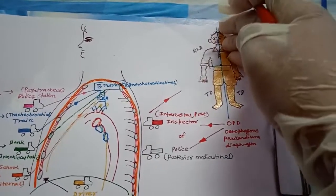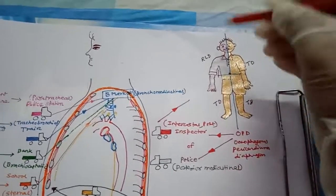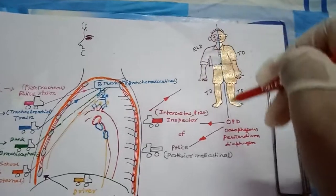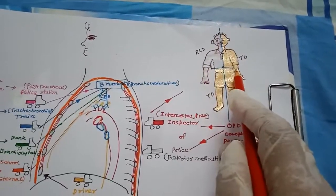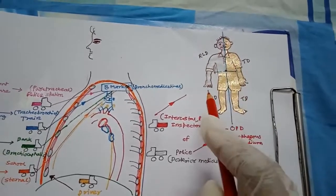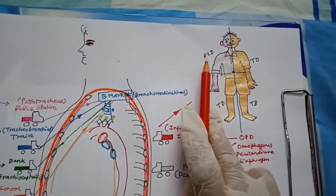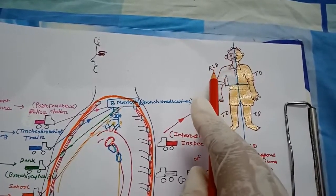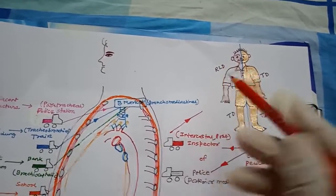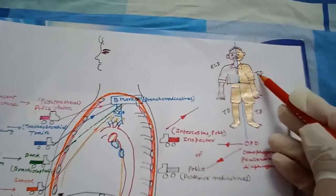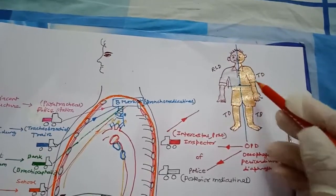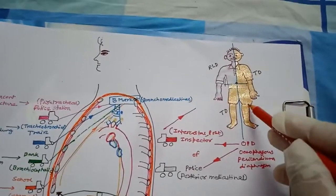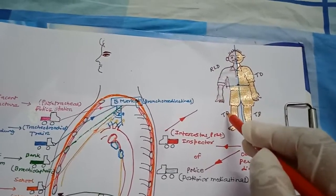In the thorax, the final channel is the right lymphatic duct on the right side and the thoracic duct on the left side. If we divide the body along a vertical axis and a horizontal axis at the level of the umbilicus, the body is divided into four quadrants. The right lymphatic duct drains the upper right quadrant.